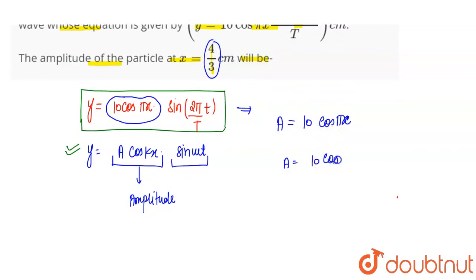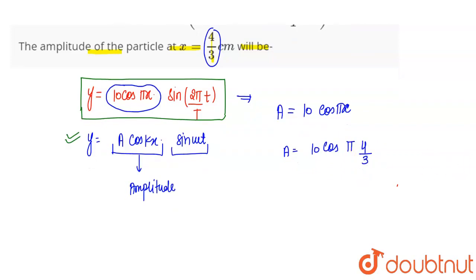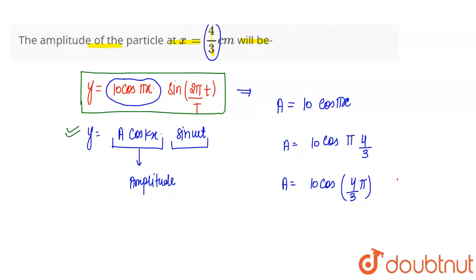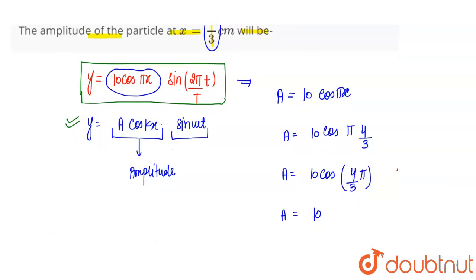So the value of amplitude will be 10 cos(4π/3). This is our amplitude. Now you can see A equals 10 cos 4π/3.